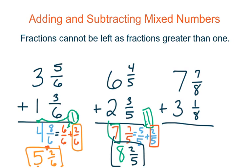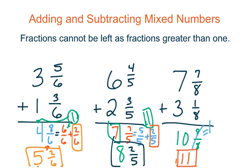Go ahead and do the next problem — add your fractions and add your whole numbers. When we add our fractions we're left with 8 eighths, and when we add our whole numbers we're left with 10. Since 8 eighths is equivalent to 1 whole, we replace 8 eighths completely with 1 whole, then add 1 whole plus 10 wholes to be left with 11 as our final answer. That's our renaming when we're left with a fraction greater than 1.